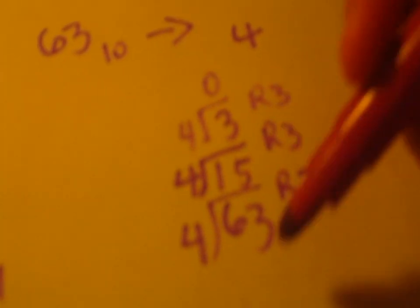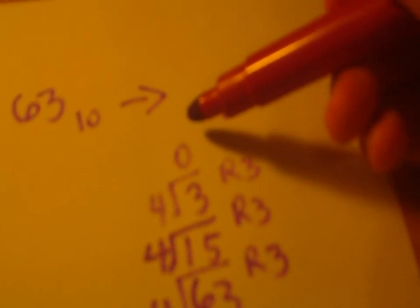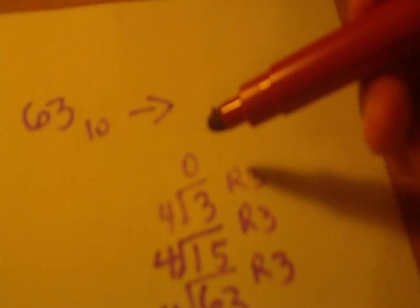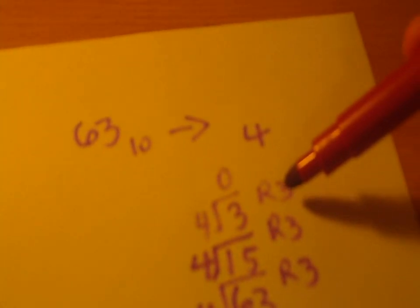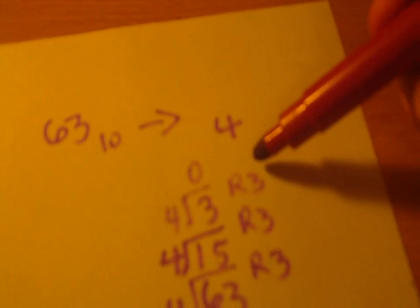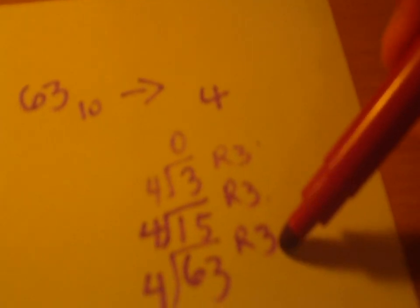Now, you keep on dividing this number until you get 0 as a quotient, and then you look at the remainders, and then you read them from up to down. So, the remainders are 3, 3, and 3.